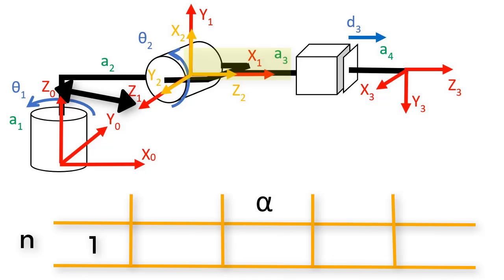This is a little bit tricky because the axis we're rotating around is x 1, not x 0, but the frame we're rotating is frame 0. Z 0 is pointing up and z 1 is pointing out of the page towards us, so we have to rotate frame 0 90 degrees to get z 0 to match z 1. Putting our thumb in the direction of x 1, our fingers curl towards us out of the page, which is the direction we need to rotate z 0. So the 90 degrees is positive, and I'll put positive 90 in the table.